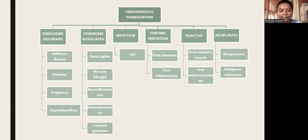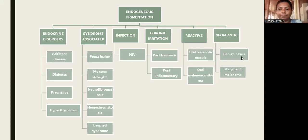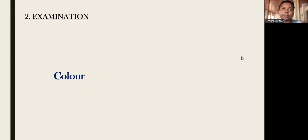Endocrine disorders which can cause pigmentation include Addison's disease, diabetes, pregnancy, and hyperthyroidism. Syndrome-associated pigmentations include Peutz-Jeghers syndrome, McCune-Albright syndrome, neurofibromatosis, hemochromatosis, and LEOPARD syndrome. Infection causing pigmentation includes HIV. Chronic irritation can cause post-traumatic irritation and post-inflammatory melanosis. Reactive lesions include oral melanotic macules, and neoplastic lesions include benign and malignant tumors such as malignant melanoma.